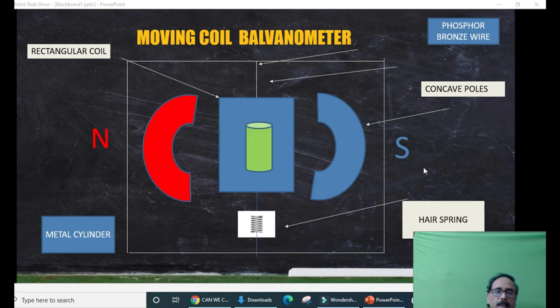A metal cylinder is placed inside the coil to concentrate the magnetic field lines.